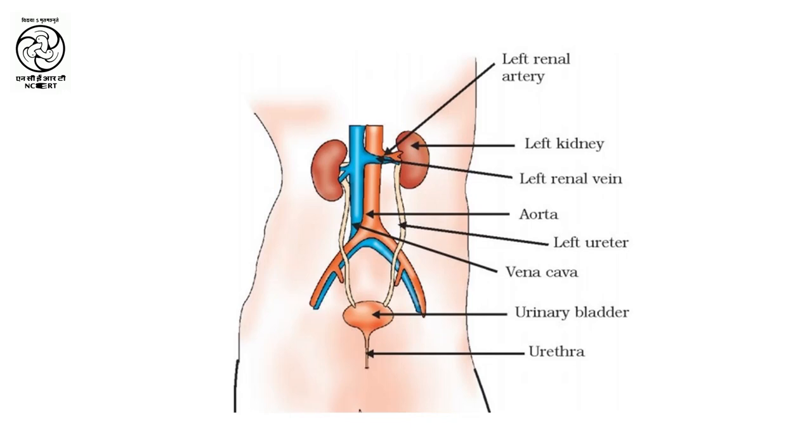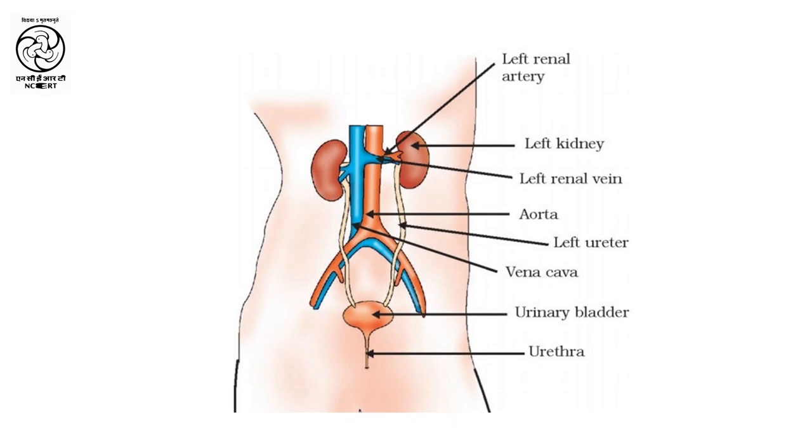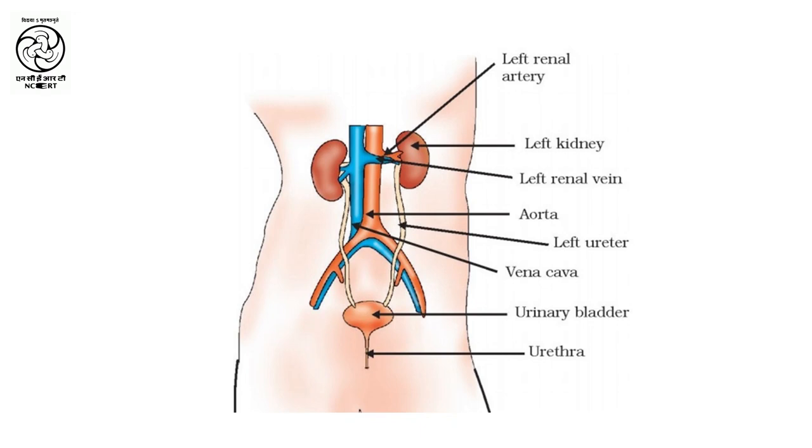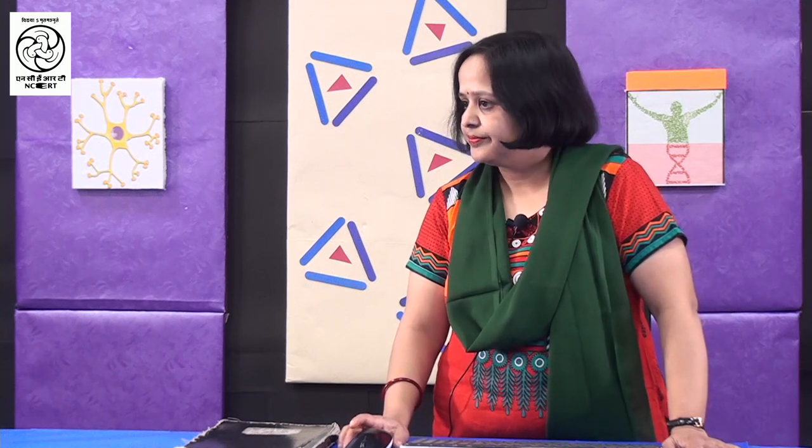Human beings have special organs for excretion and these are called kidneys. Now, look at the computer screen — you can see the diagram of the excretory system. The kidneys are red and bean-shaped structures present in the abdomen region, on either side of the backbone. The kidneys are connected to the ureters, which are connected with a urinary bladder and a urethra. Through the urethra, urine is passed.